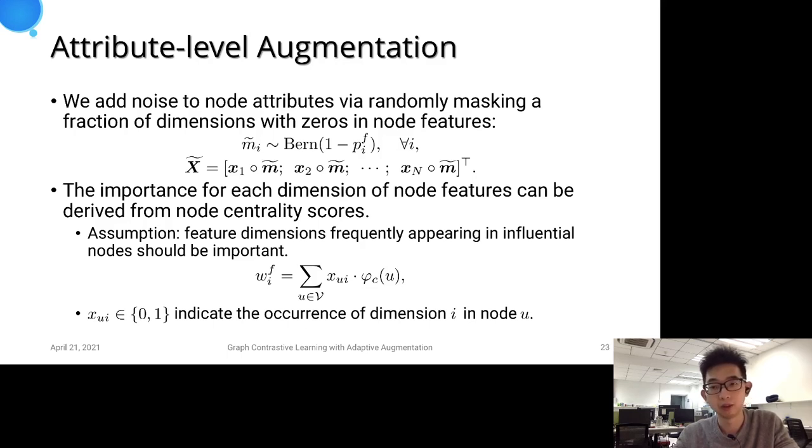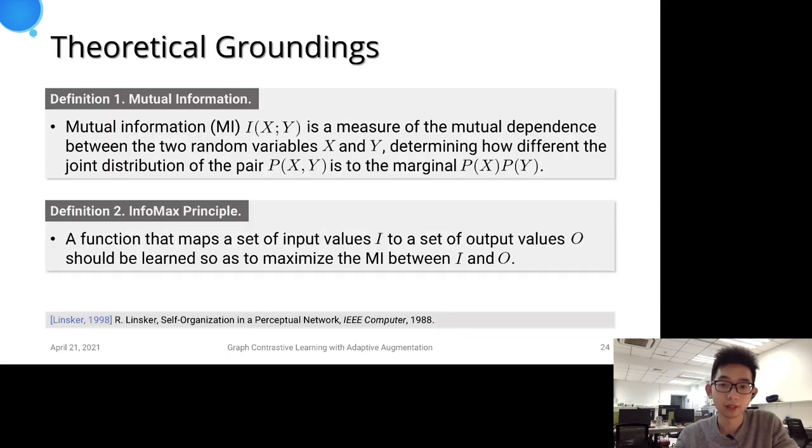Then, similar to topology level augmentation, we transform the importance score into masked probabilities via log transformation and normalization. At the end, I'd like to briefly talk about the theoretical basis of our contrastive learning framework.